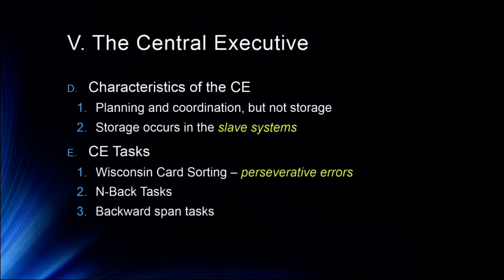Other central executive tasks include the backward digit span task — unlike forward digit span where you recall digits in order, in the backward version you have to reverse the order and report the digits in reverse. That's where the central executive comes in. We're also going to talk about the operation span task, which is the primary way we assess working memory capacity today. It's difficult, but it gets at what we mean by the central executive's ability to operate on information.